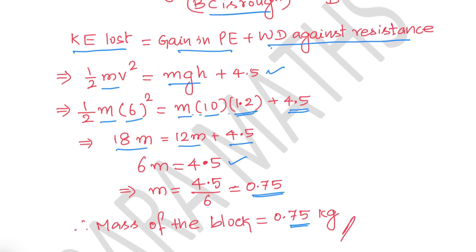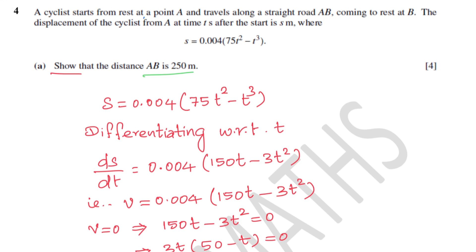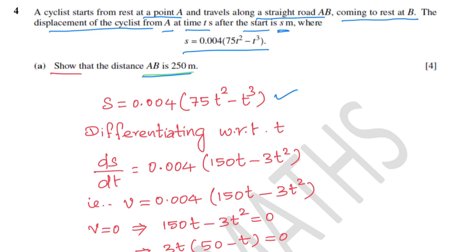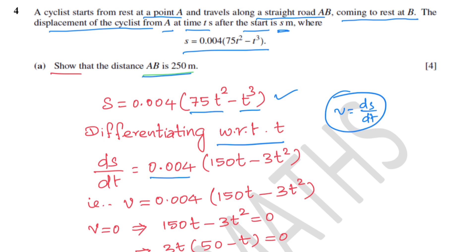Question four. A cyclist starts from rest at point A and travels along a straight road AB, coming to rest at B. The displacement s meters at time t seconds is given by s equals 0.004 times (75t squared minus t cubed). Show that the distance AB is 250 meters. Velocity v equals ds/dt, so differentiate with respect to t.